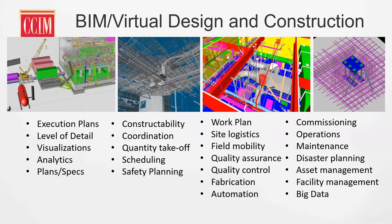Once the building is built, going through the commissioning process and turning it over to the owner — giving the owner this information so they can use it in their operations, maintenance, disaster planning, asset management, and facility management — gives them more power because they know everything about the building. Think of it like a VIN number for a car: you can pull up the VIN number and find the exact light bulb you need for your right rear tail light. That's what we're getting to with buildings — knowing every piece and part that goes into that building, who worked on it, and when it was installed.